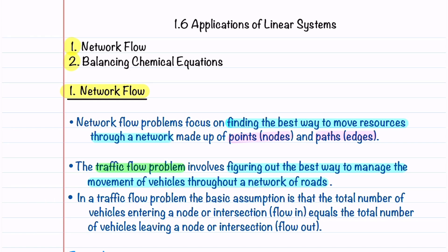In a traffic flow problem, the basic assumption is that the total number of vehicles entering a node or intersection, called the flow in, equals the total number of vehicles leaving a node or intersection, called the flow out. So you just need to set the flow in equal to the flow out.